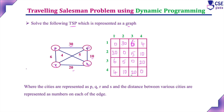The same problem was implemented in the previous session using the tabulation method, where case 1, case 2, and case 3 were considered, and for each case the route and its cost were calculated. Now we are going to implement the same problem using a state space tree — a simpler approach that helps us understand better compared to the tabulation method.